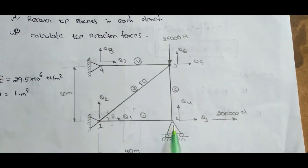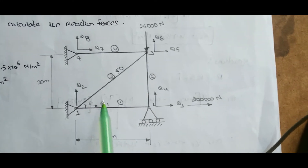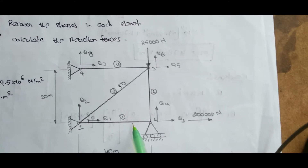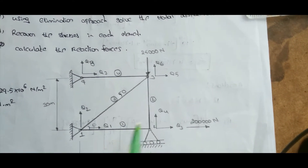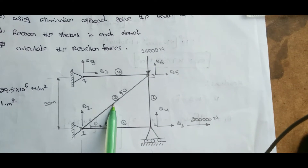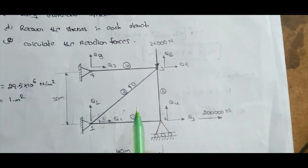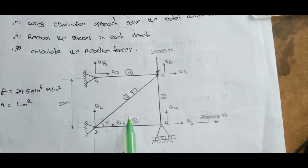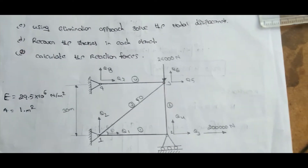There are 3 supports. This is the truss element diagram. First of all, we have to indicate the number of elements. This is element number 1, indicated with the number 1 inside a circle. Then this is element number 2. This is element number 3. This is element number 4. In this problem, the nodal numbers, element numbers, and displacement numbers are mentioned in the question itself.